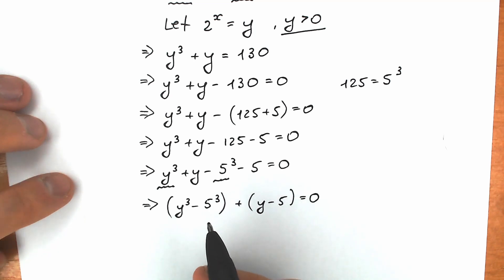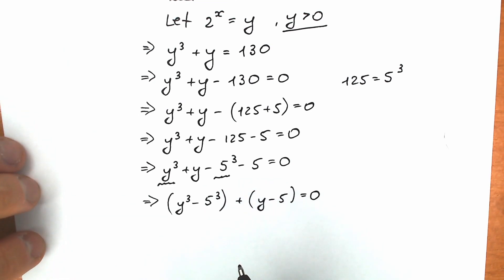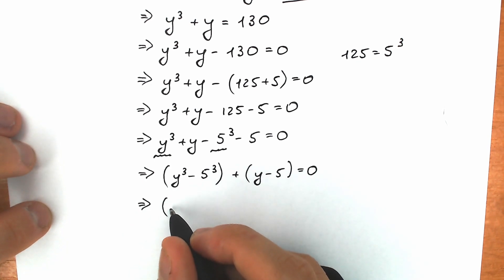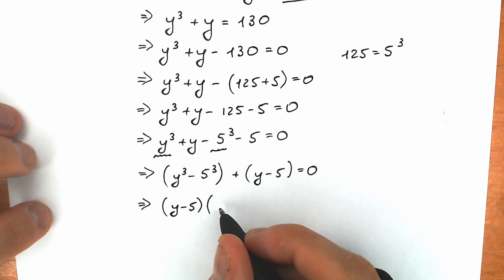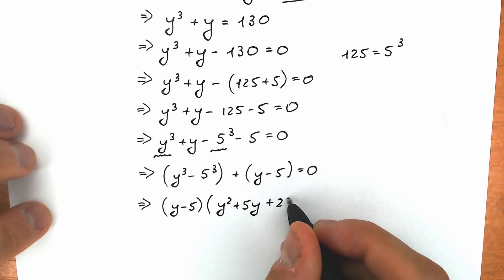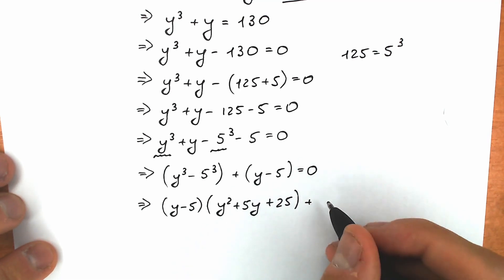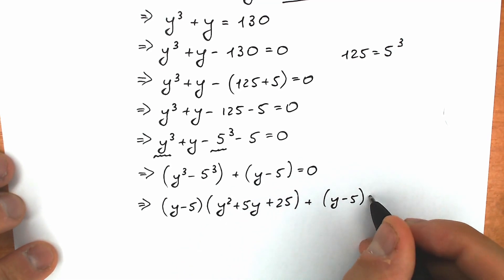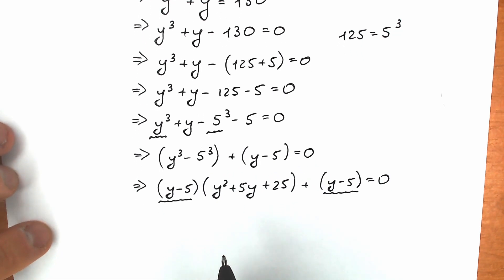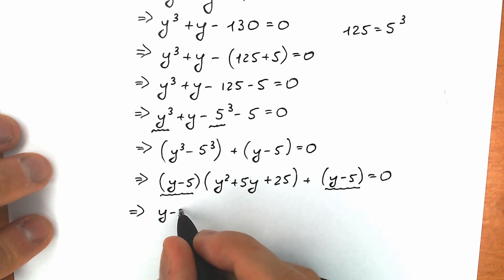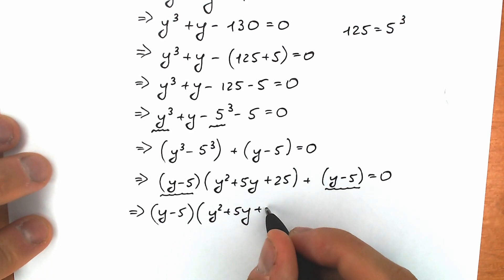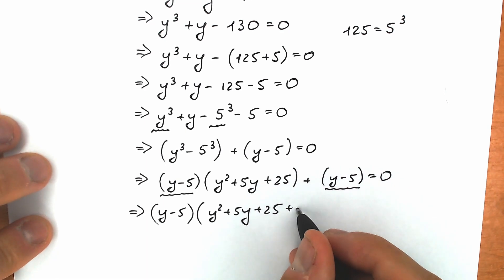Now, y cubed minus 5 cubed is the difference of two cubes — a school identity. The result is: (y minus 5) times (y squared plus 5y plus 25), plus (y minus 5), equals 0. We have y minus 5 appearing in both terms, so we factor it out: (y minus 5) times (y squared plus 5y plus 25 plus 1) equals 0, giving us (y minus 5)(y squared plus 5y plus 26) equals 0.